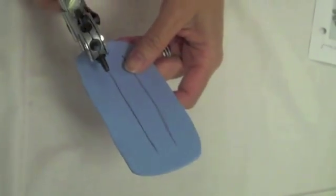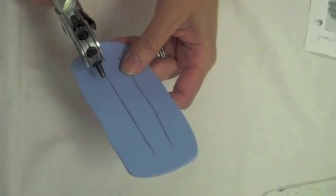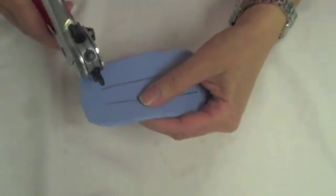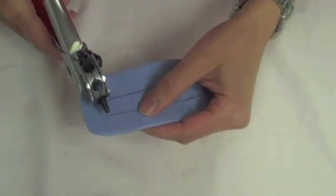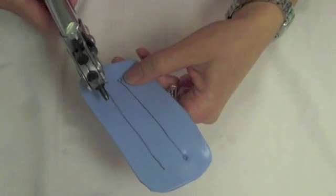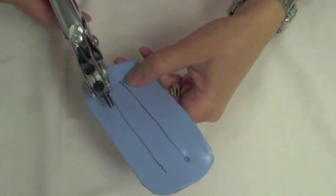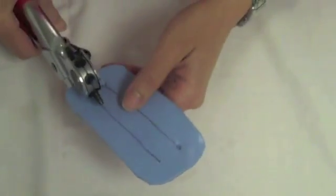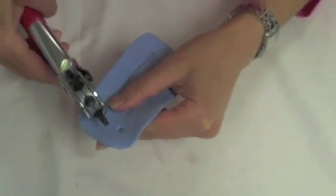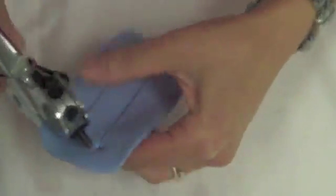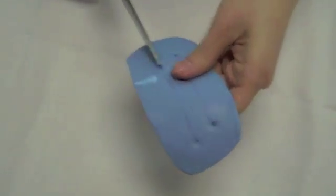Take the hole puncher and punch a hole at the ends of each of the lines. Cut along both lines to create the bar segment of the lumbrical bar splint.